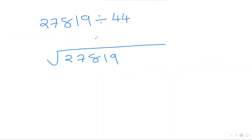Let's do another question: 27819 divided by 44. First step — is 44 closer to 40 or 50? It's closer to 40, so I put down 4 here. To get from 44 to 40 I subtract 4, so I write down −4. That's my important number for this problem.